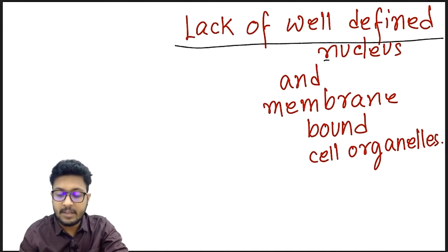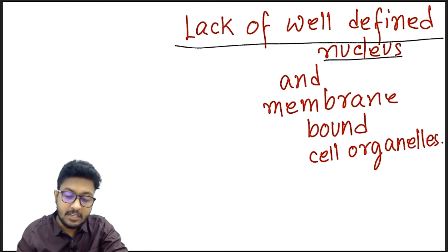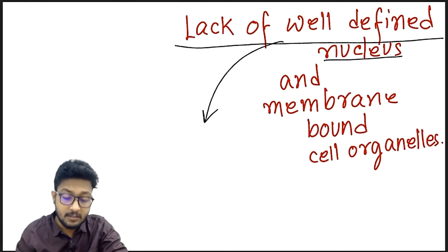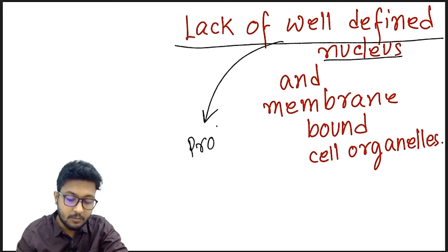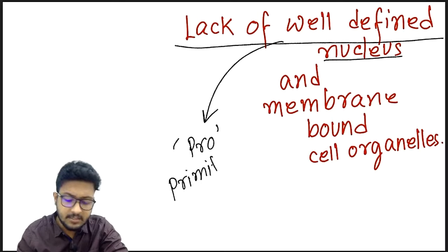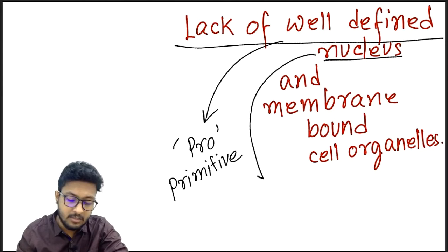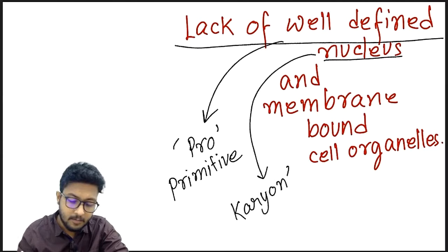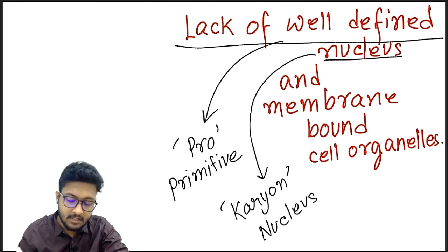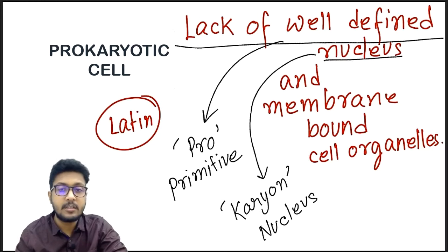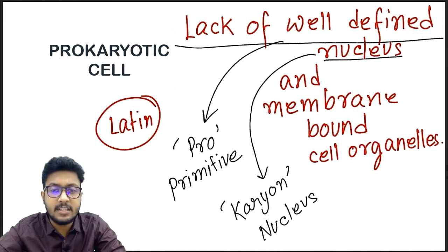This lack of a well-defined nucleus is expressed in the term prokaryotic, where 'pro' means primitive or early, and 'karyon' means nucleus of the cell. From there the term prokaryotic and prokaryotic cell came.